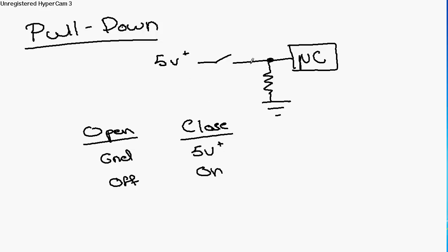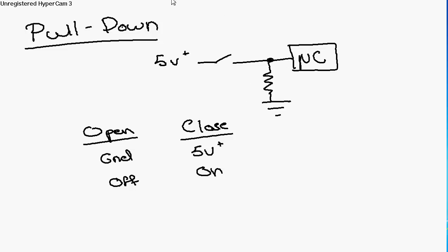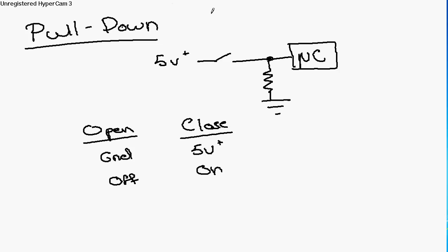Now, this is sort of the reverse of the pull up. Now, 5 volts will flow across and into this, and not be pulled down, as opposed to this, where the reverse is true, and it's that resistor that's helping to direct where things flow.